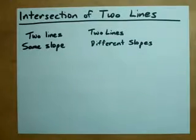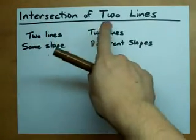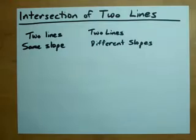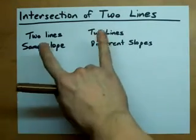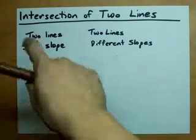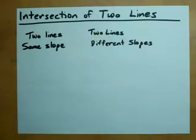Hey guys, I want to talk about the two different ways that lines can intersect. Now when you have two lines, they either have the same slope or different slopes.